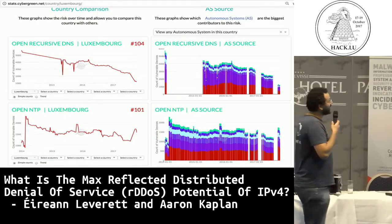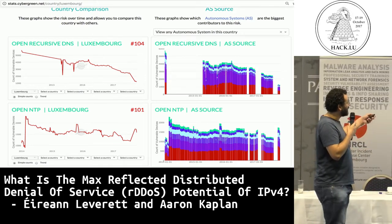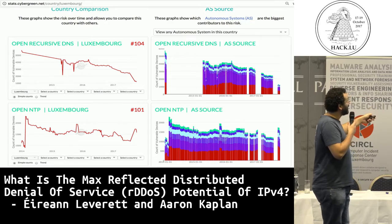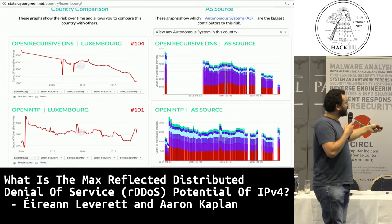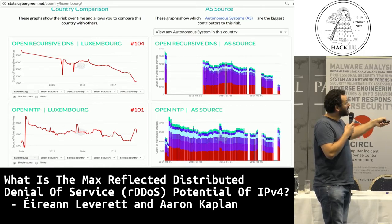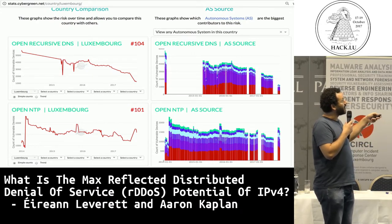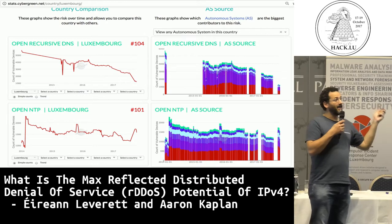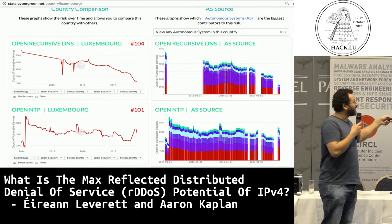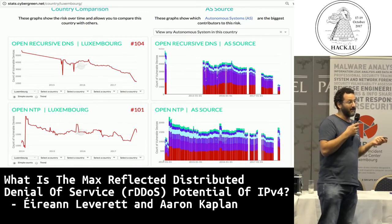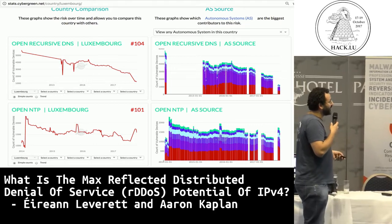This is how the data ended up in the portal page. You can track things over time for different protocols, compare different countries or ASNs, and get a breakdown of different ASNs within a country. Usually it's always like one big ASN which contributes the most. So you can apply the 80-20 efficiency principle: first, talk with the big ASNs - the big producers of DDoS potential - to clean that up.